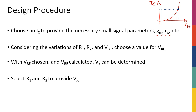We want to start designing the biasing circuit that gives us that VBE and that IC. First thing first: gm is equal to IC over Vt. So we choose an IC that gives us the gm we want. And rpi is just beta over gm, so once we set IC and have gm, we have rpi.